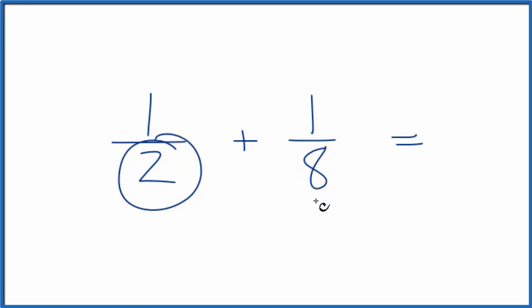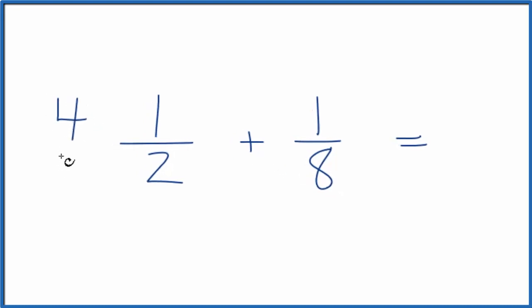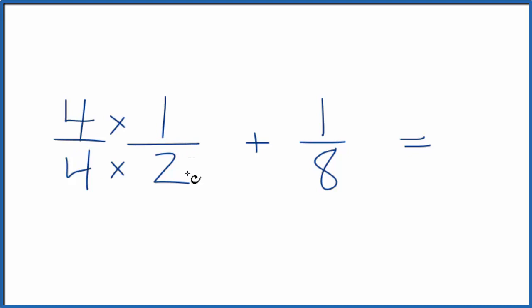We can see that two would go into two once, it would go into eight four times. So if I multiplied one-half by four over four it would still be one-half because four over four that's just one, but now I'd have a different denominator.